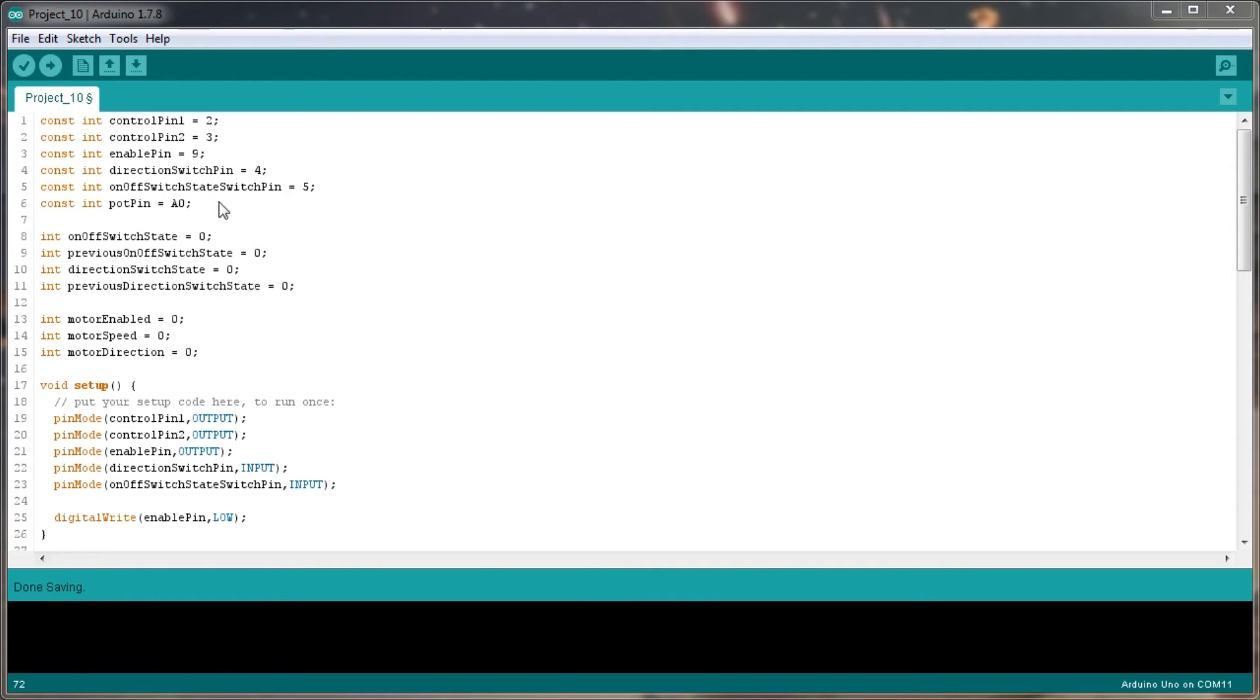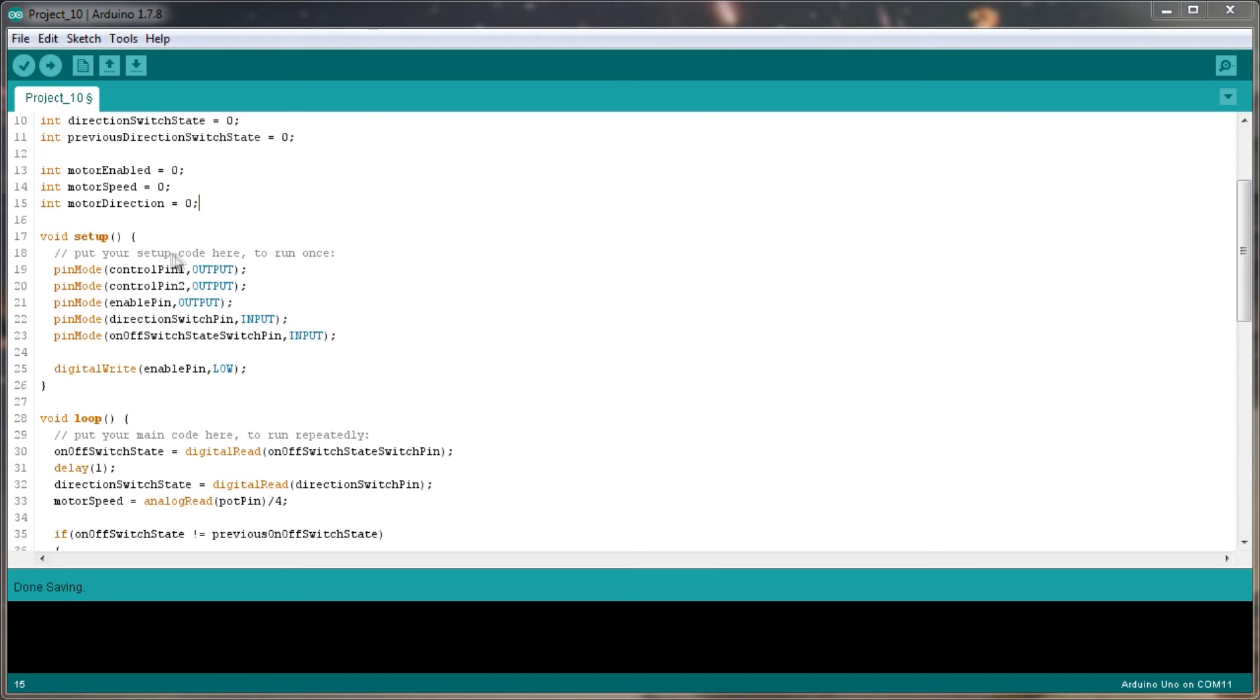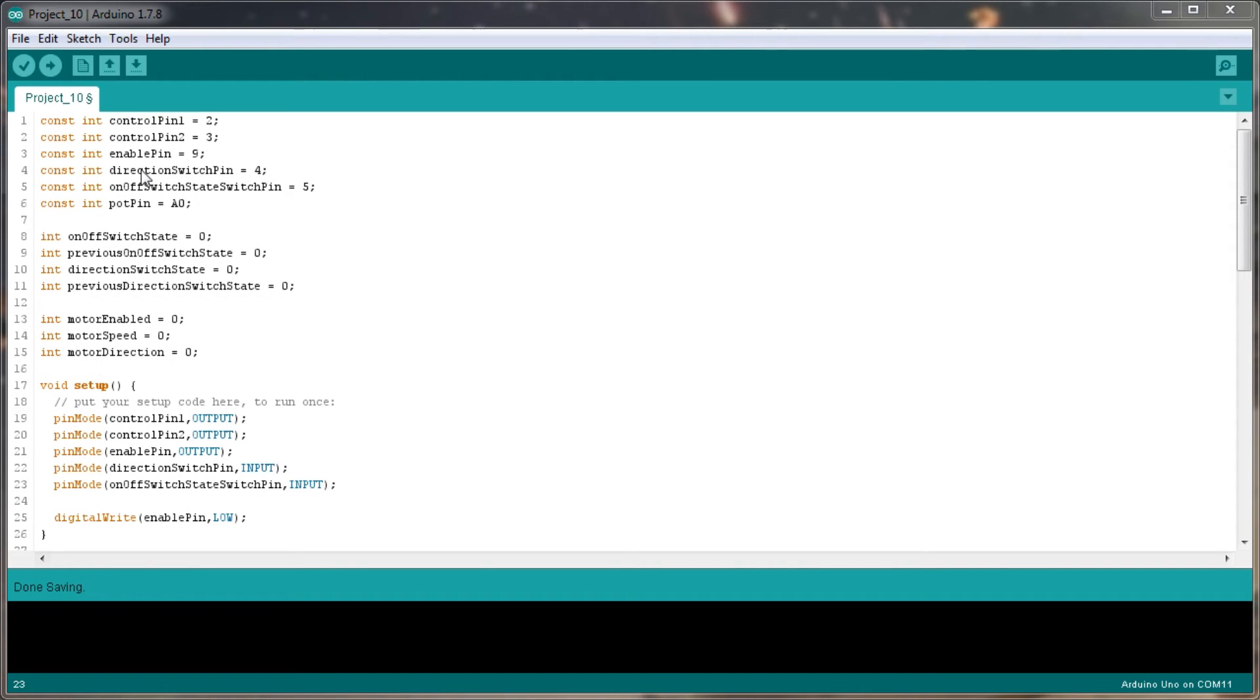So what we're doing is we're initializing all of the constants, that is our digital inputs, digital outputs, analog as well, so that's all of there. And then we've got our actual switch states, so it looks like we're, instead of having a button that works, we're actually using the buttons as switches this time, so when you click a button it's going to turn on off and then turn the direction of the motor on off as well, or turn the direction of the motor clockwise, anti-clockwise shall I say. So that's the direction switch state and the previous direction switch state, then we've got motor enabled zero, motor speed and motor direction, all starting at zero. In the setup we're enabling our control pins, output, output, output for the three digital pins, control pin one, two and the enable pin, and also the direction switch pin is an input and the on off switch pin is an input as well. So on off switch pin, direction switch pin are the direction switch pin four and five, so if I just have a look over here, yes, they are connected to the two buttons on the board, so that's what they are.